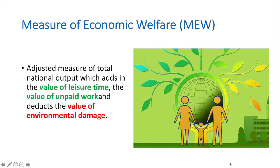The second measure is the Measure of Economic Welfare. The MEW is an adjusted measure of total national output which adds in the value of leisure time, adds in the value of unpaid work, and deducts the value of environmental damage. This is not an index but an adjusted value of national output.